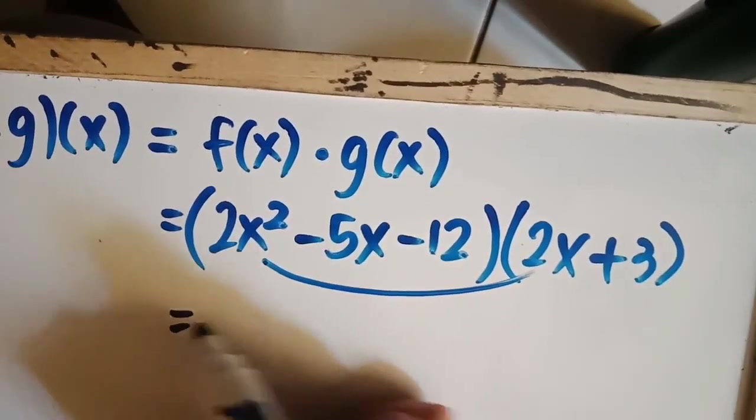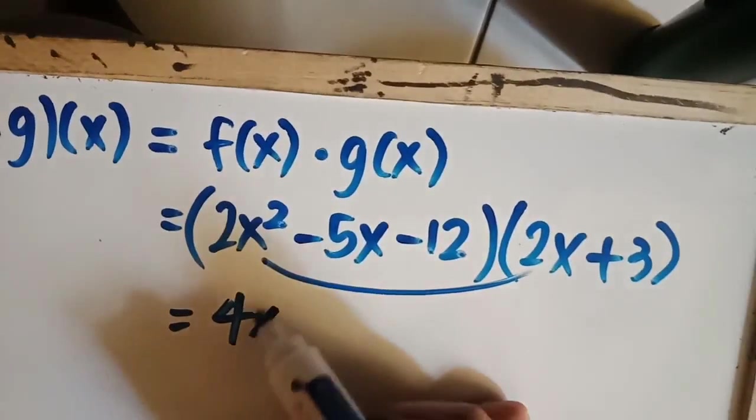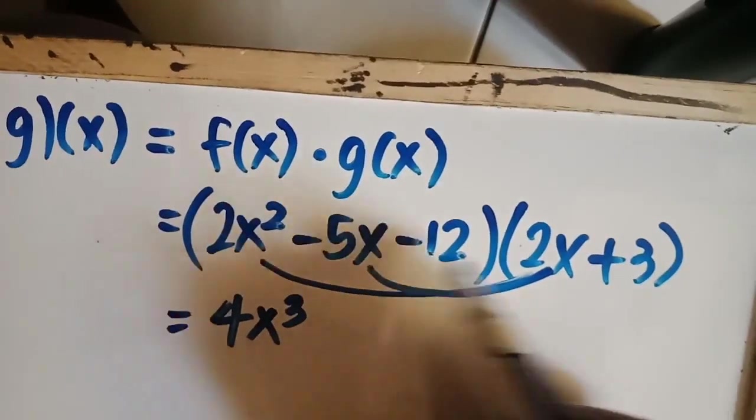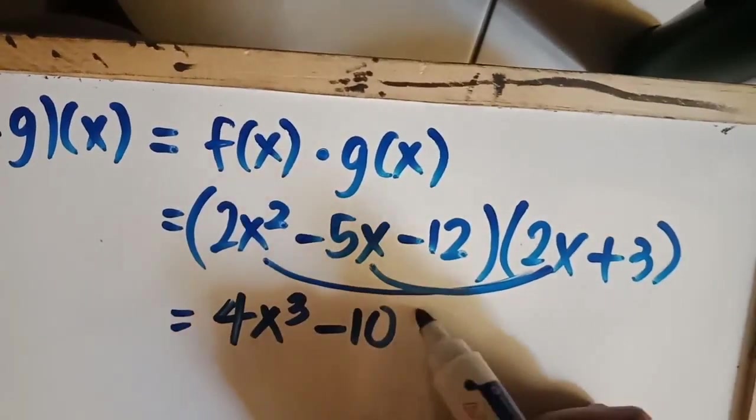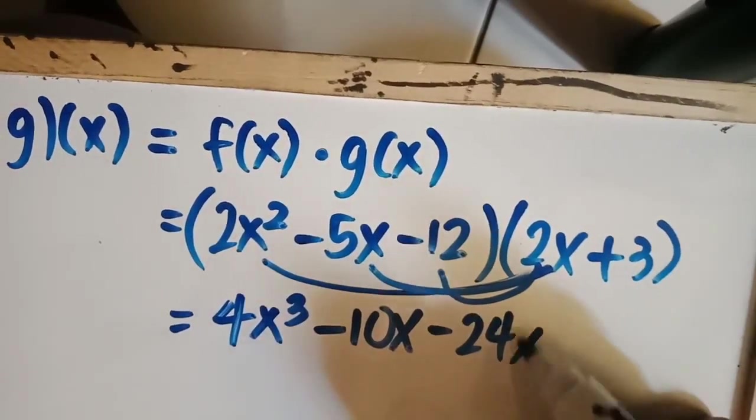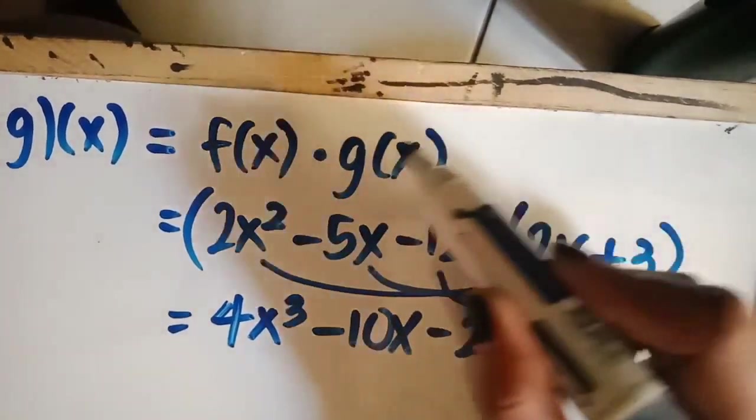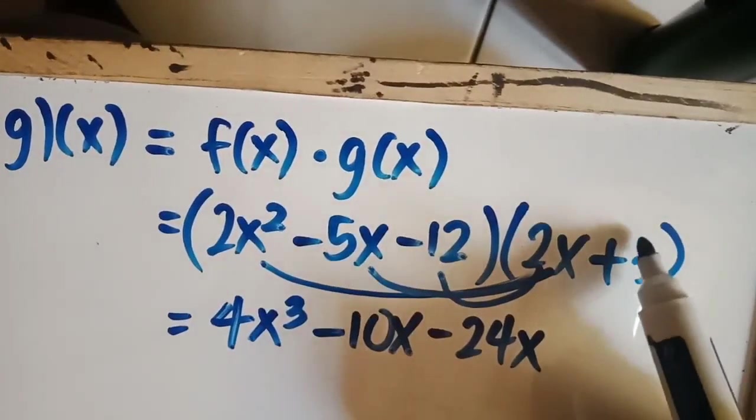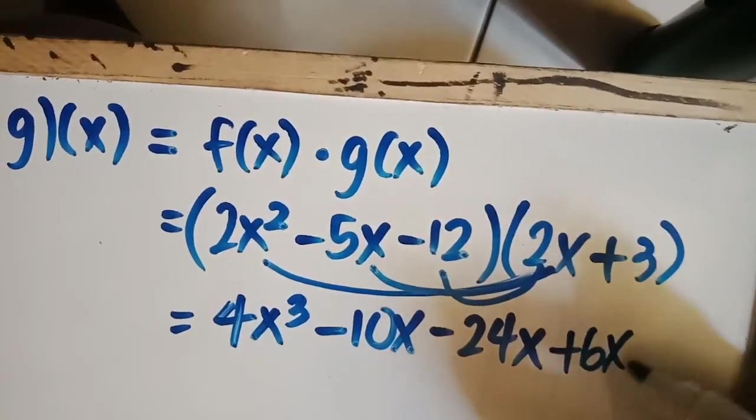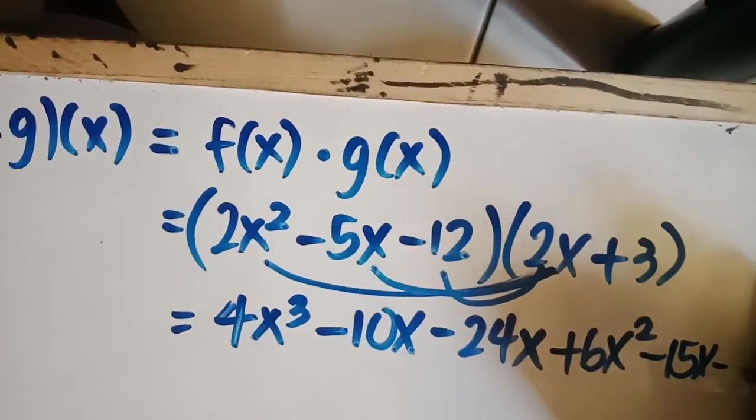We have 2 times 2, that is 4. x squared times x is x cubed. Next, we have negative 5 times 2, that is negative 10x squared. And we have negative 24x. For the last term, we have 3. Distribute this term in the trinomial. So we have plus 6x squared minus 15x minus 36.